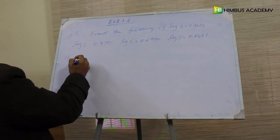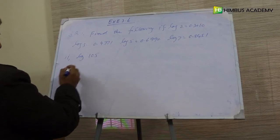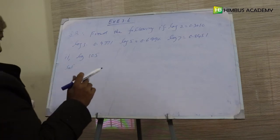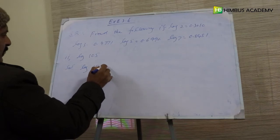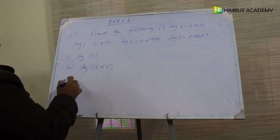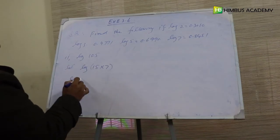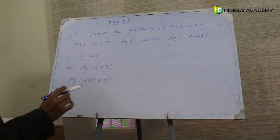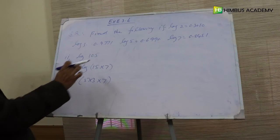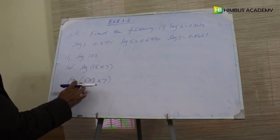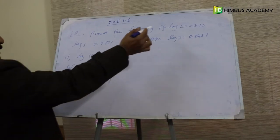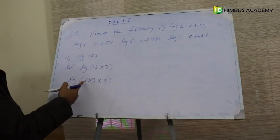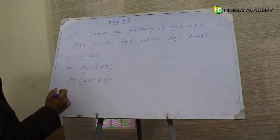Part f: log 105. Log 105 is equal to log of 105. We split 105 as 5 × 3 × 7. ہم اس طرح split up کرتے ہیں کیونکہ ان چیزوں کی ویلیوز ہمیں دی گئی ہے — log three، log five اور log seven کی ویلیوز موجود ہیں۔